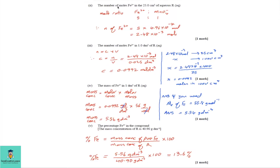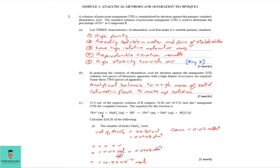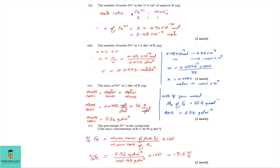We are required to find the number of moles of iron 2+ in 25 cm³ of aqueous R. From the equation, the mole ratio between iron 2+ and MnO₄⁻ is 5 to 1. Therefore, the moles of iron 2+ is 5 times the moles of the manganate 7 ion, which is 5 × 4.96 × 10⁻⁴, giving us 2.48 × 10⁻³ moles.